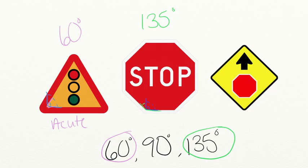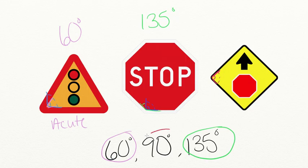Let's look at our last sign. We are going to put a right angle on the corner to see how it fits. As you can see, a right angle seems to fit pretty well, and that's because this sign is made out of 90-degree angles — four 90-degree angles. And that's how you can use 90-degree angles to estimate the size of an angle you're measuring.